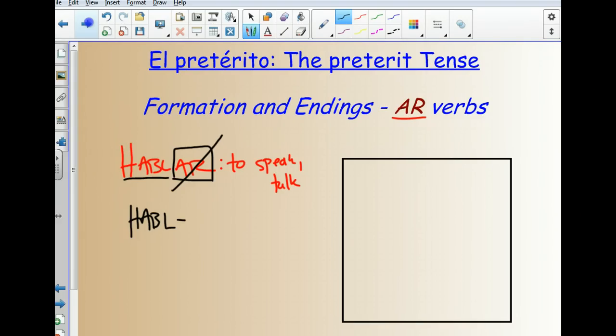And this is what you add your endings on to. That's where HABLO comes from, I speak, or HABLABA, I used to speak. And here, like I said, is where we're going to attach our endings. So what are our endings for AR verbs in the preterite tense? Well, our endings, and this is really important to memorize. The first thing that we need to know about the imperfect tense. Here's our endings for AR verbs.